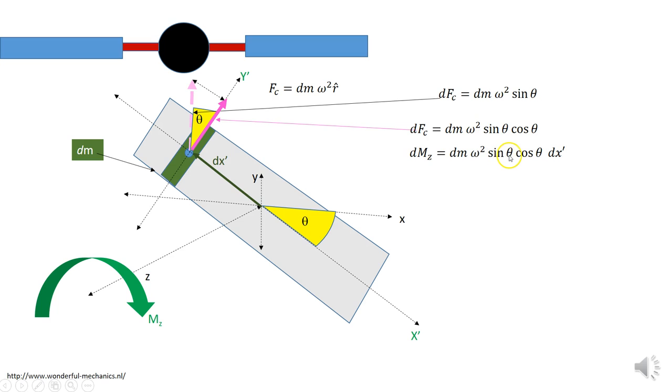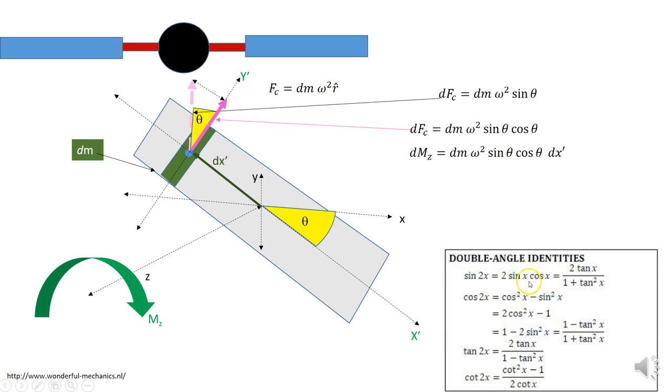Now, looking at sine theta cosine theta, if I look that up in a book of tables, here we have it here. So sine 2 theta is equal to 2 times sine theta cosine theta. Or divide both sides by 2. I get sine of 2 theta over 2 is equal to sine theta cosine theta. Or a half sine 2 theta is equal to sine theta cosine theta. So I'm going to substitute that in for these two values here.